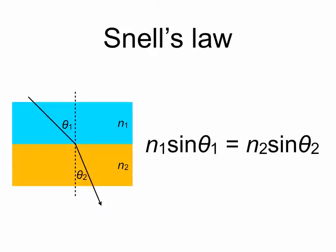An example of Snell's Law. Snell's Law states that when light passes through materials with different refractive indices, n1 and n2, then n1 sinθ1 equals n2 sinθ2.